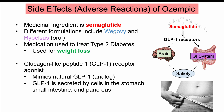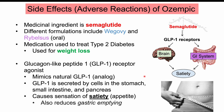Semaglutide causes satiety — the feeling of being full and not being hungry — through several mechanisms in the brain and stomach. It can slow gastric emptying, keeping food in the stomach and making us feel fuller more quickly. It also binds to pancreatic beta cells, the cells that secrete insulin, helping to regulate glucose-dependent insulin secretion, which is why it's useful in patients with type 2 diabetes.